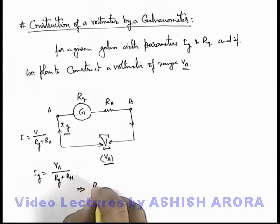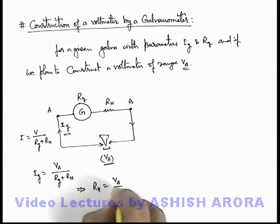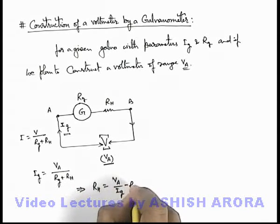So this implies the value of high resistance here we can calculate. This will be V_a by I_g minus R_g.